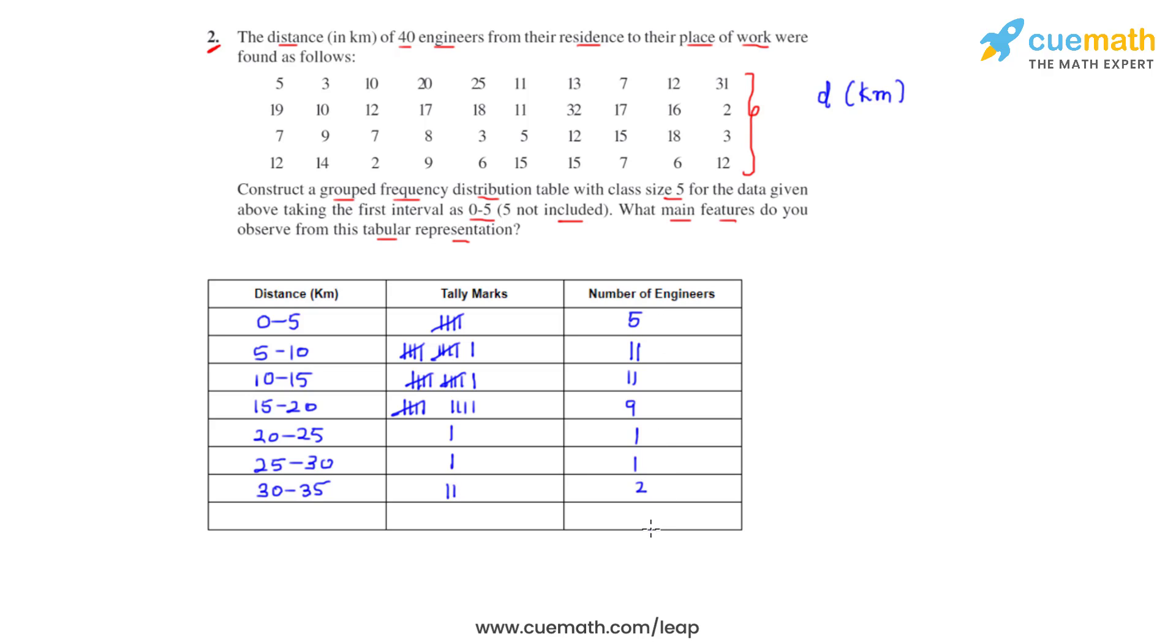Now if we add up the frequency we get a total of 40. That tells us that we have not missed on any of the engineers. So from this we can observe that there are five engineers for whom the distance d is less than five kilometers. That is, their office or the place of work is less than five kilometers from the place of residence.